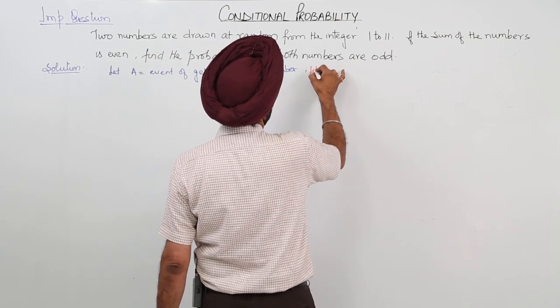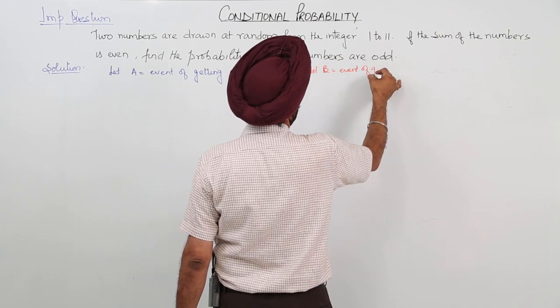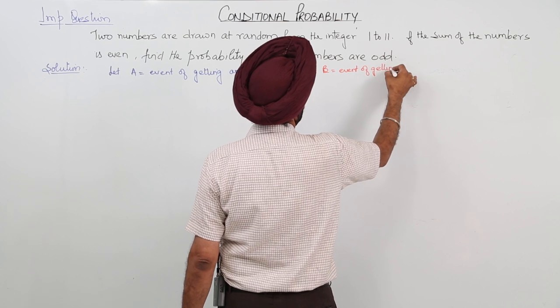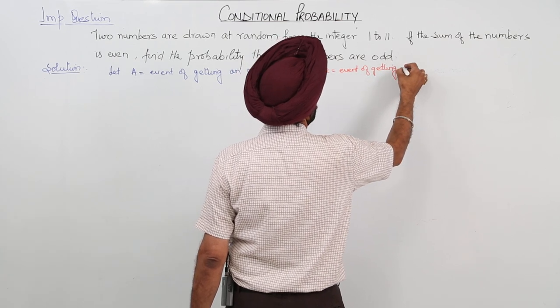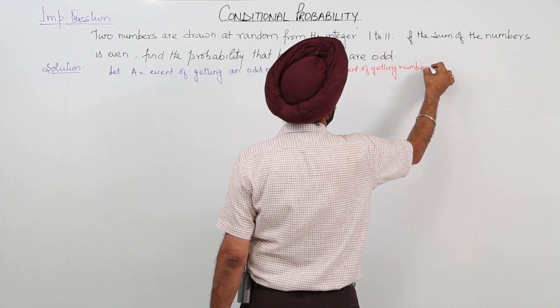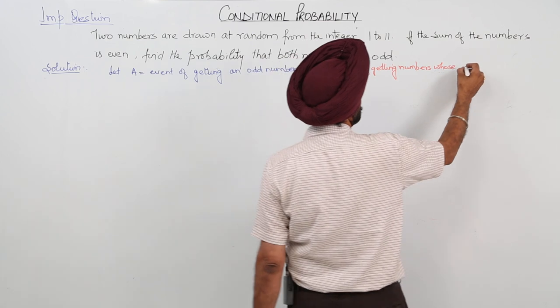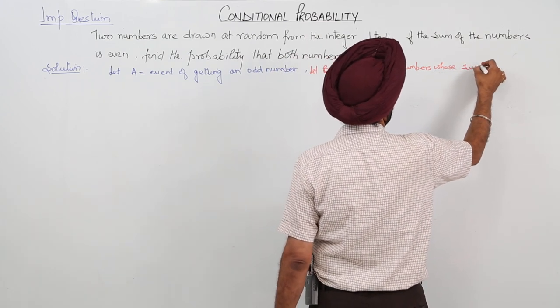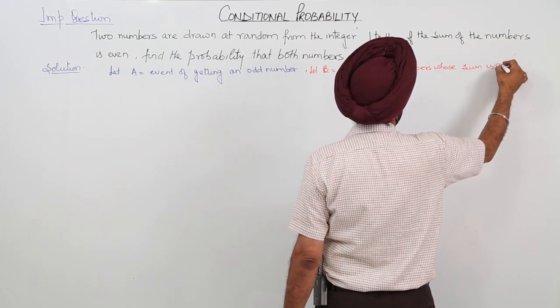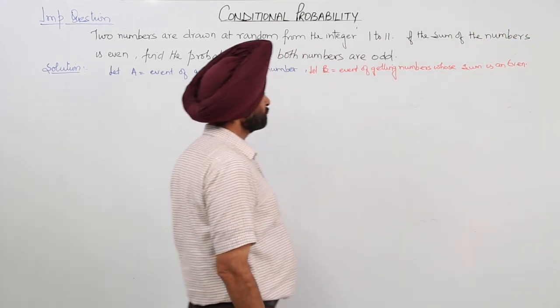And let B is equal to event of getting numbers whose sum is an even.